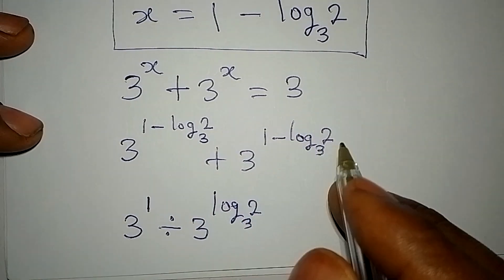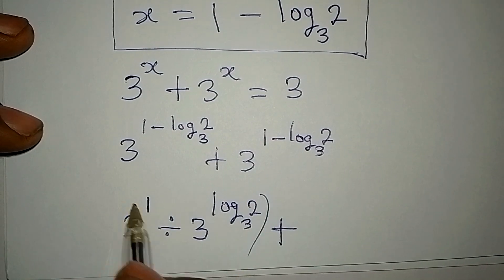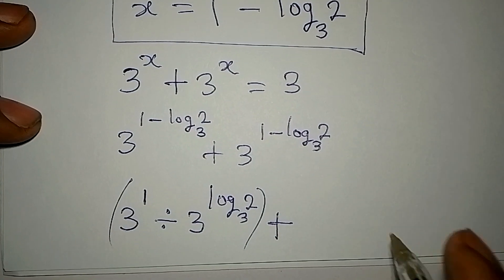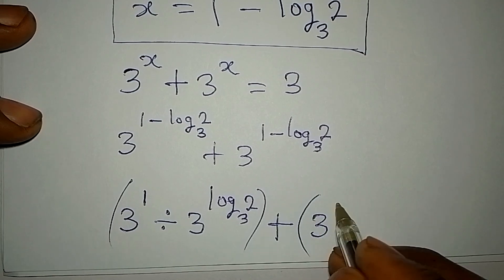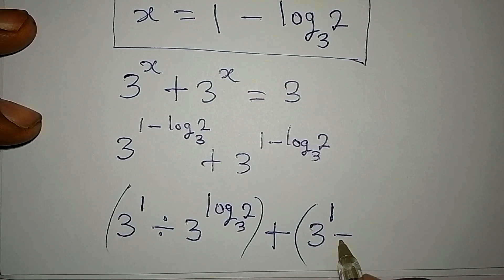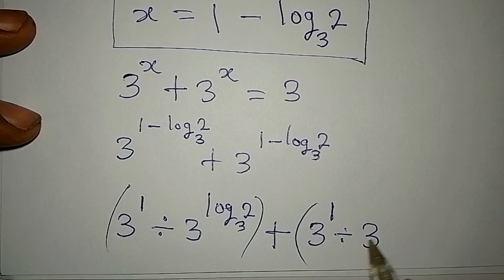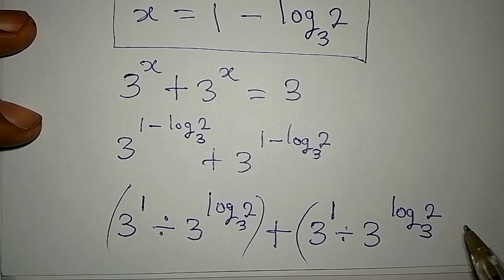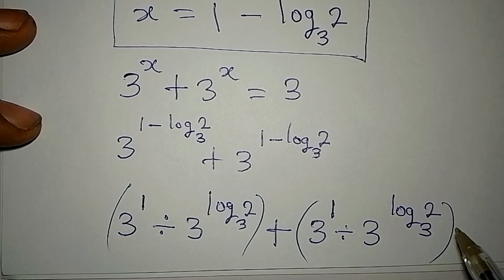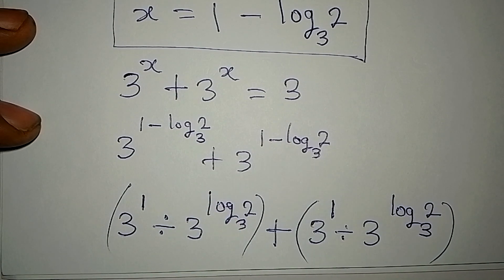Then if I go over there it will be the same thing: plus, in brackets, 3 to the power of 1 divided by 3 to the power of log 2 to base 3. Remember, I'm trying to prove how we are going to get the 3.